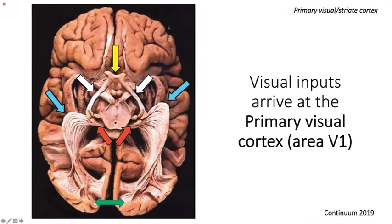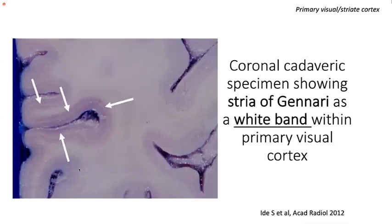Visual inputs relay in the lateral geniculate nucleus and via optic radiations reach the primary visual cortex, area V1. Even on naked-eye inspection of a gross specimen, the abundantly myelinated optic radiations can be seen synapsing at cortical layer 4 — this is the stria of Gennari. This distinctive feature gives the primary visual cortex its other names: the striate cortex, striped cortex, calcarine cortex, or chalky cortex.